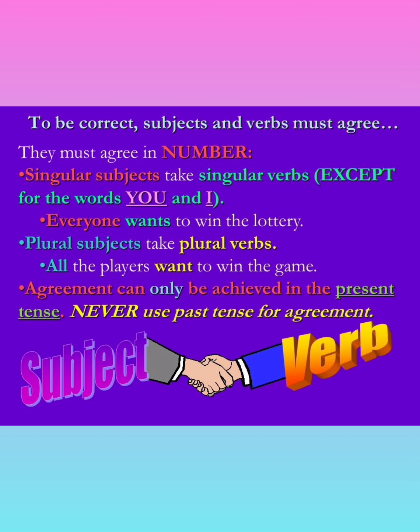Singular subjects take singular verbs, except for the words 'you' and 'I.' Everybody wants to, or everyone wants to win the lottery — as seen in the previous example with everybody but Julio. Here also, everyone wants to win the lottery. Plural subjects take plural verbs. All the players want to win the game — here 'all the players' is the plural subject, and that's why the verb is also plural: 'want to win the game.'